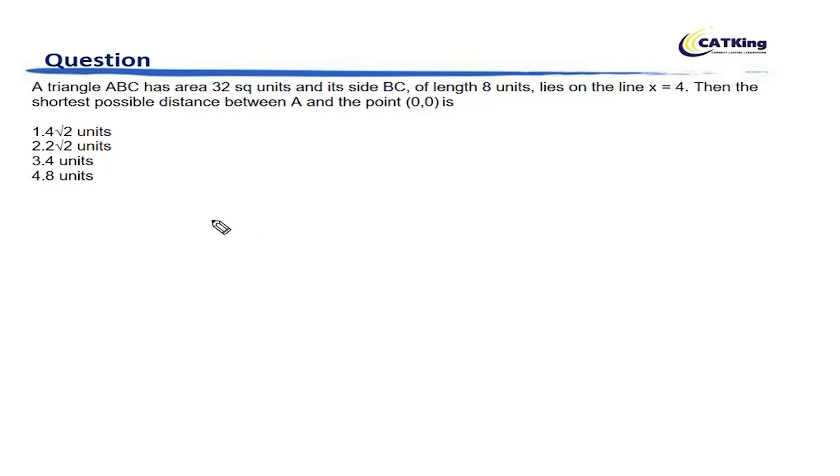Now let's get on with this question. There is a triangle ABC having an area of 32 square units. BC is of length 8 units and lies on the line X equals 4.